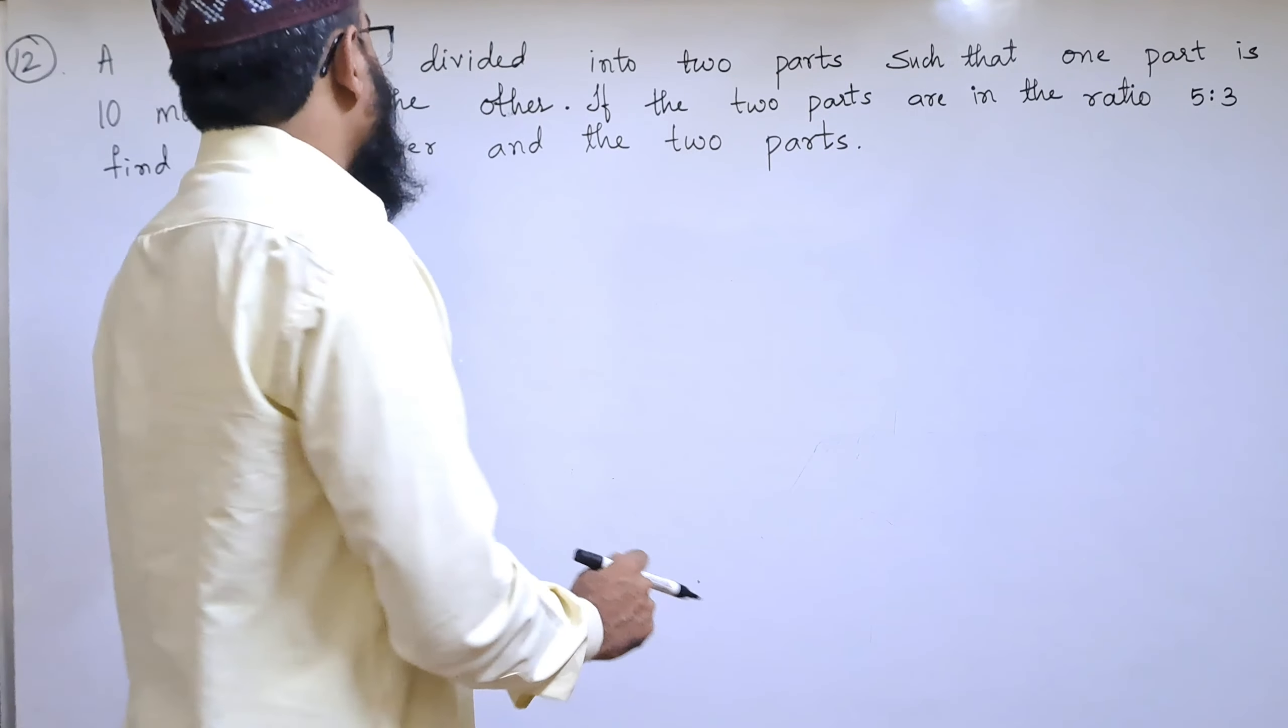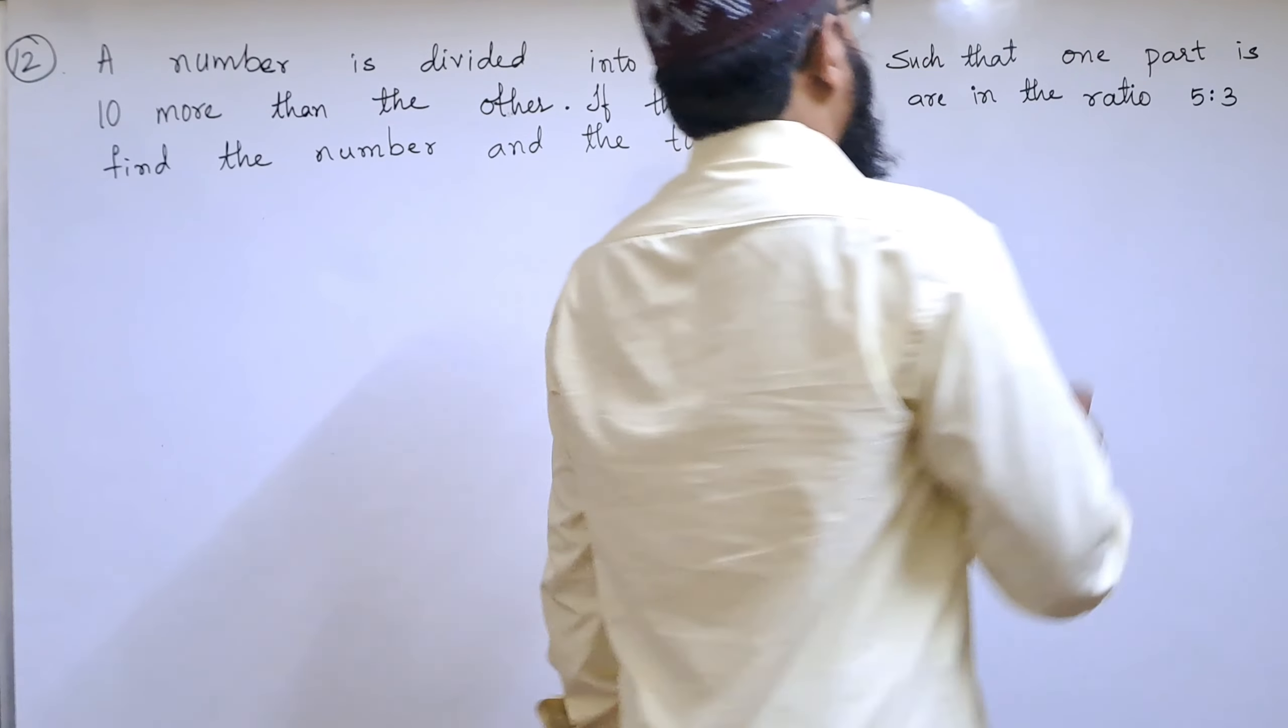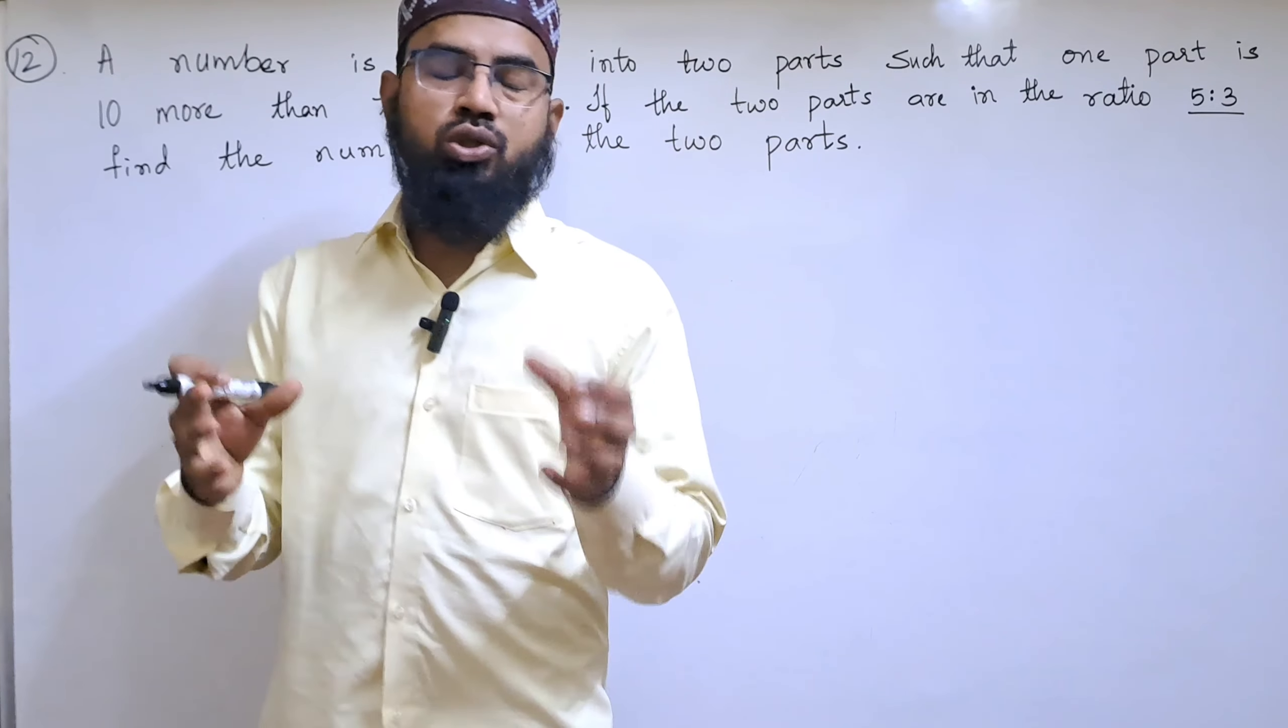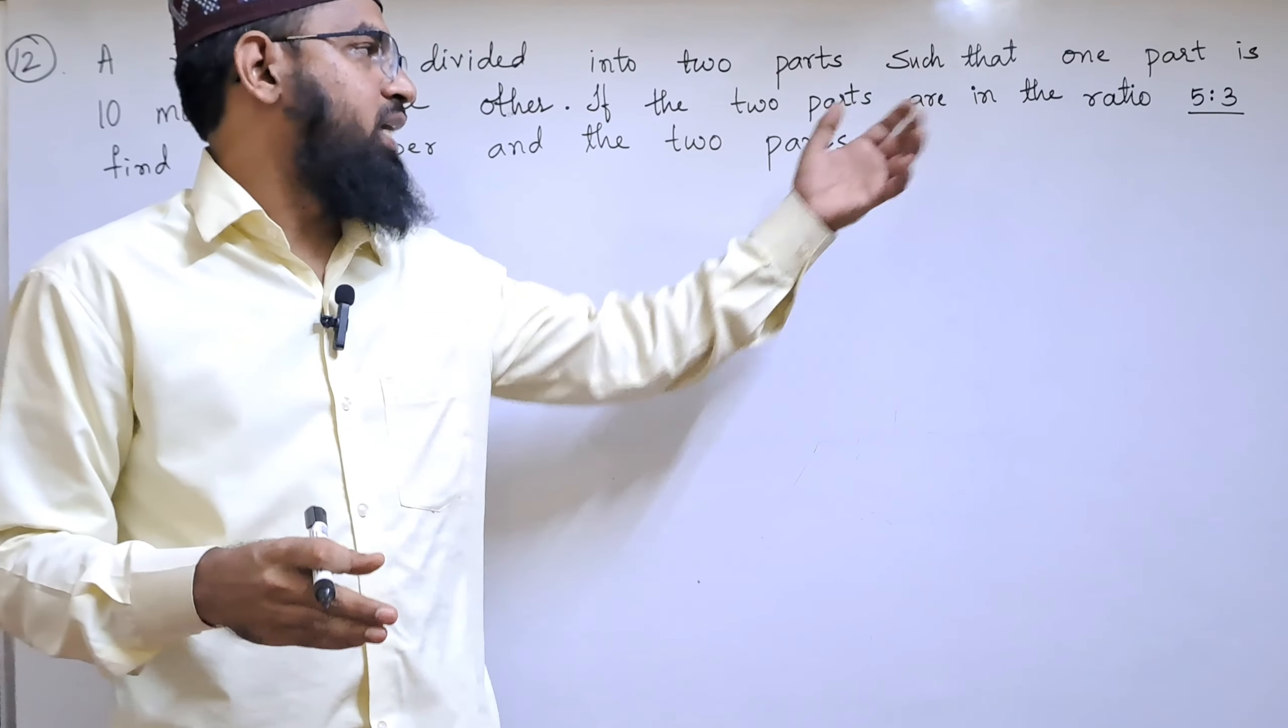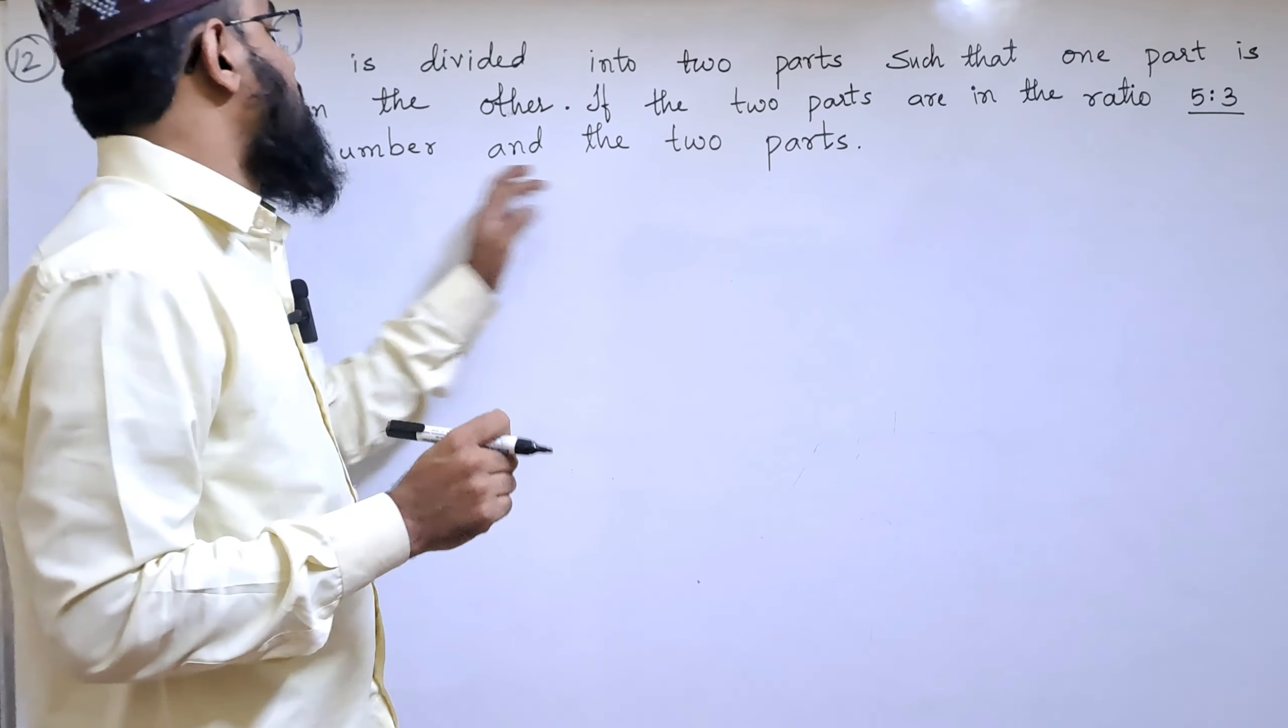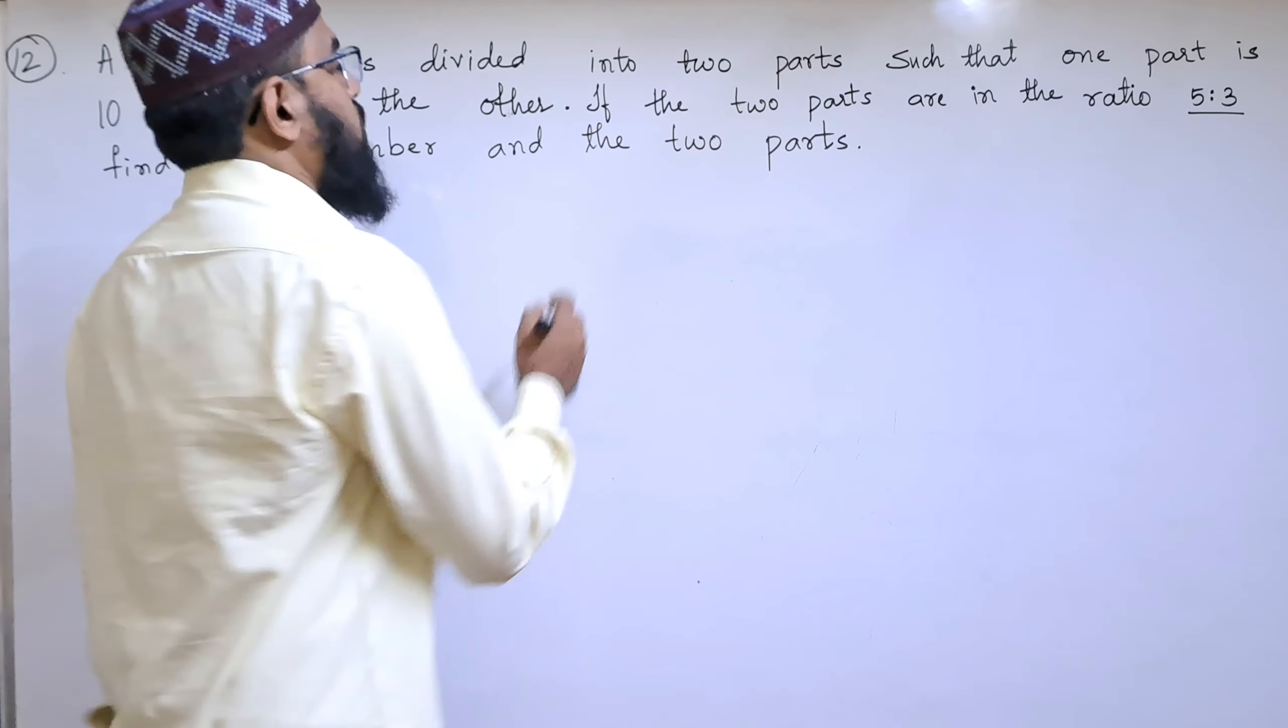If the two parts are in the ratio 5:3, find the number and the two parts. So we need to find out the two parts and the number.